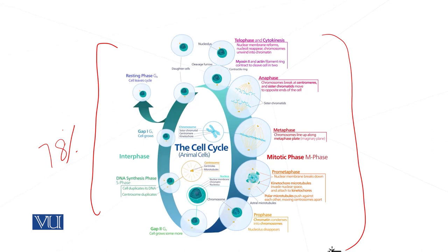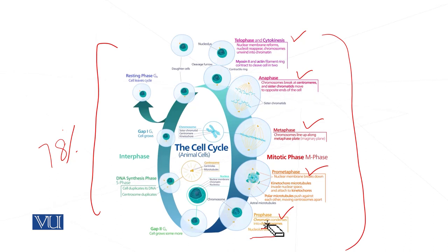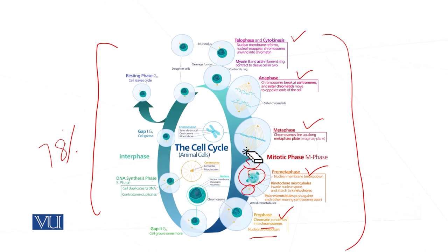Now we are going to visualize prophase, prometaphase, metaphase, anaphase, telophase, and cytokinesis. In prophase, chromatin condenses into chromosomes and the nucleolus disappears. In prometaphase, the chromosomes are now more condensed, the nuclear membrane starts to break, and the centrosome is moving to opposite poles for the division of chromosomes.